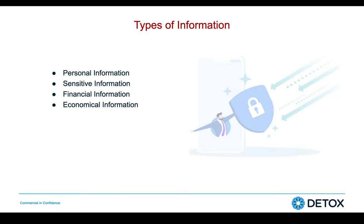Now let's talk about types of information. There are four different types of information: the first is personal information, the second is sensitive information, the third is financial information, and the fourth is economical information.